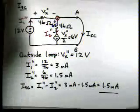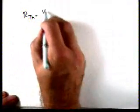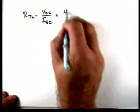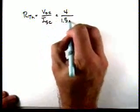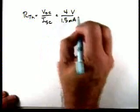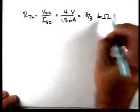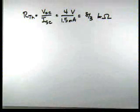going back to the problem-solving strategy, we can calculate the Thevenin resistance by taking the ratio of V open circuit to I short circuit. So we have 4 divided by 1.5 milliamps. 4 volts divided by 1.5 milliamps tells us that our Thevenin is 8 thirds of a kilohm.